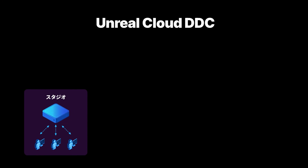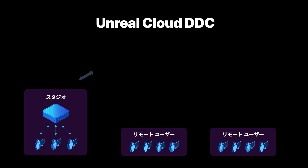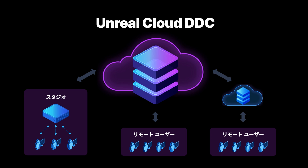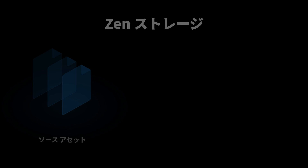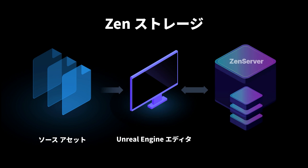New in this release is Unreal Cloud DDC, a self-hosted cloud storage system for the Unreal Engine-derived data cache. Designed for distributed users and teams, it enables you to efficiently share Unreal Engine cached data across public network connections. Our local DDC also now uses a new server architecture, offering improved data conditioning performance, faster load times and CI workflows, and other benefits.